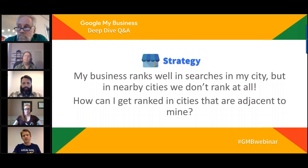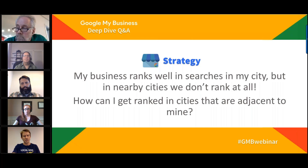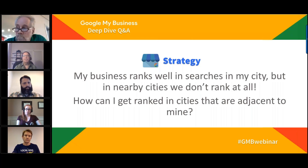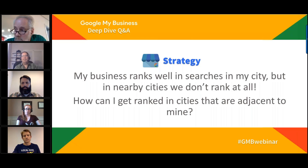This approach helps with relevance, not proximity. Proximity is the most difficult factor to influence because people are moving. If someone searches 'pizza near me' in an adjacent city, they want something within half a mile to a mile — not 10 miles away. Google wants to show the most relevant information right near the user.